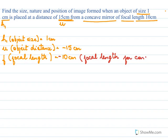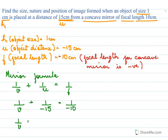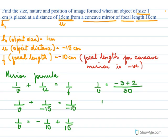We'll now use the mirror formula: 1/v + 1/u = 1/f. We do not know v, the image distance. 1/u = −1/15 and f = −10, so 1/v = −1/10 + 1/15. Taking LCM of 10 and 15, which is 30, we get −3 + 2 = −1, so 1/v = −1/30.